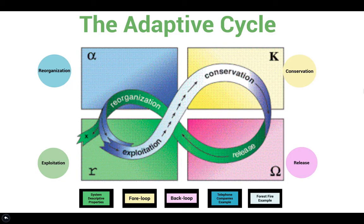All ecosystems at every level go through the four stages of the adaptive cycle: exploitation, conservation, release, and finally reorganization. In this video we will define these four stages using the three properties that determine the characteristics for each cycle, and I'll also go through two examples of systems analyzed using the adaptive cycle as a model.